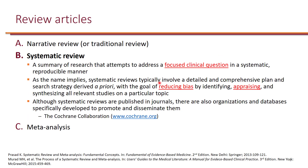In a systematic review, there is a systematic process that involves a focused clinical question. There is a system in place to search the literature and identify studies that answer this focused clinical question. Because there is a method — for example, inclusion and exclusion criteria for study selection — this process is reproducible. The goal is to reduce bias by identifying, appraising, and synthesizing all relevant studies on a particular topic.